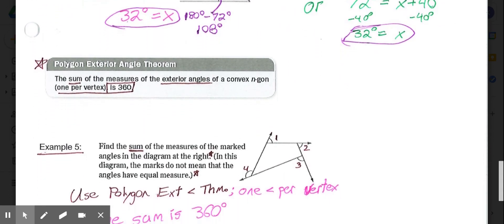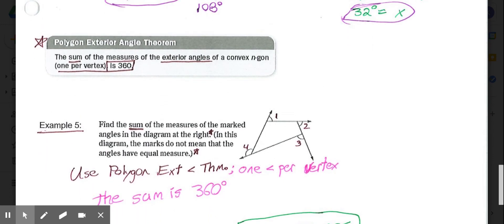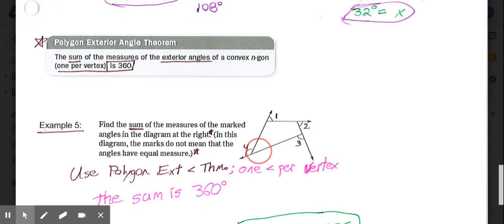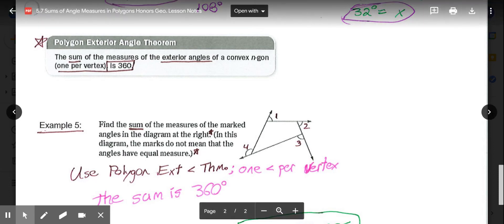And then, our final theorem for this lesson is the polygon exterior angle theorem, which says the sum of the measures of all the exterior angles of a convex n-gon, or any convex polygon, is 360. If I have this quadrilateral right here, I have one, two, three, four exterior angles. Four sides, four exterior angles. I know that the total of these four is 360.